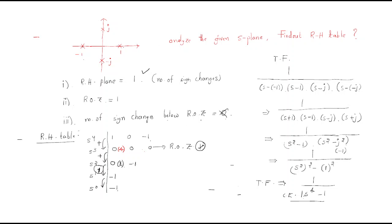The number of sign changes below ROZ is actually one, meaning there is only one pole outside the stable region. If there were no sign changes, there would be no right-hand poles. One sign change means one right-hand pole, and there are no symmetric poles creating additional problems. This completes the RH table analysis. I hope everyone understands this session — thank you.